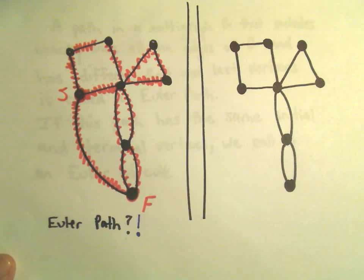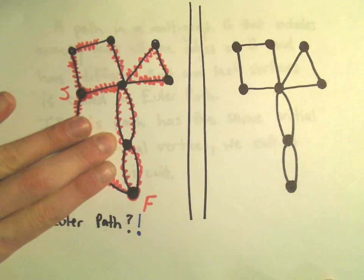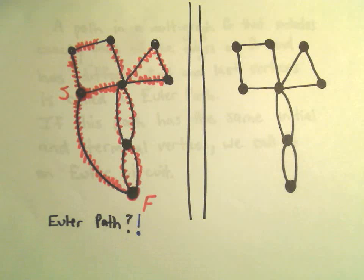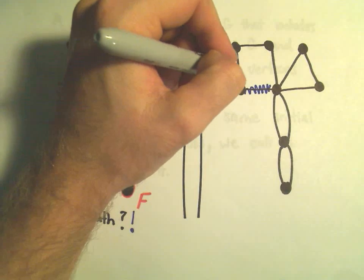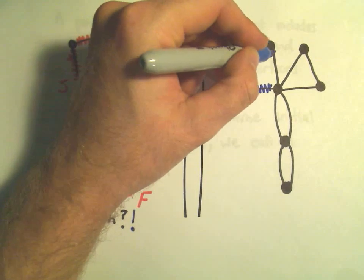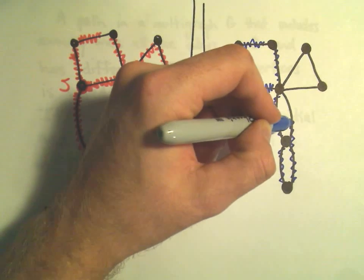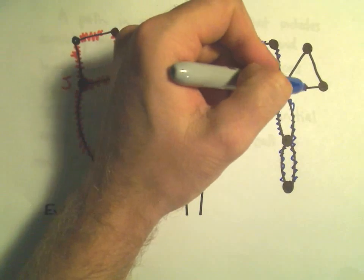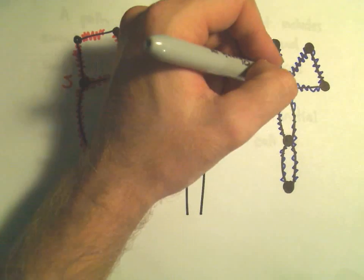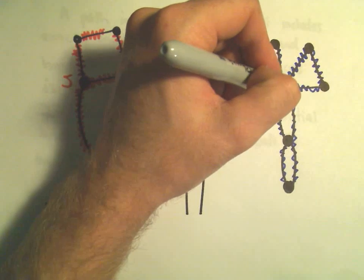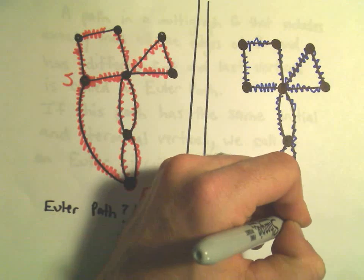Let's look at our other graph here too. Notice the only thing that's different is I've basically just deleted this one edge — the last edge we used. Here it doesn't really matter where you start. Suppose we start right in the middle. We could go along sort of the square, maybe we go along the bottom, then back up the right side. And then we could walk however we want to around the little triangular part. We used every edge exactly once, and we stopped and started at the same place. So in this case, we found what's called an Euler circuit.